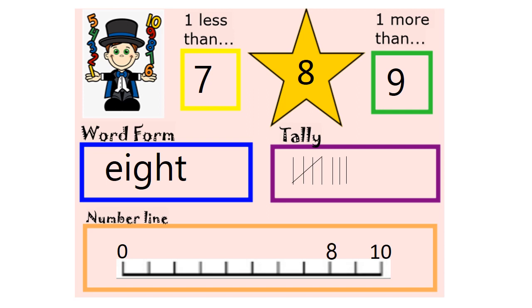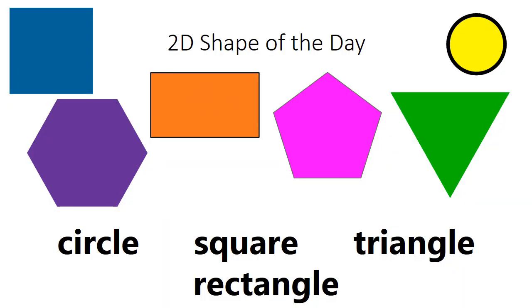With our shape of the day, I will normally pick a shape in my head and describe it and get children trying to guess or tell their partner what shape I'm describing. For example, I might say: my shape has four sides and four corners, it has two longer sides and two shorter sides. What is my shape?